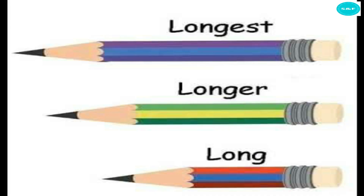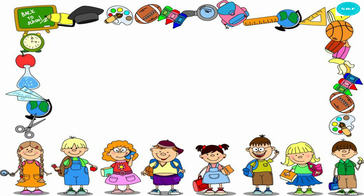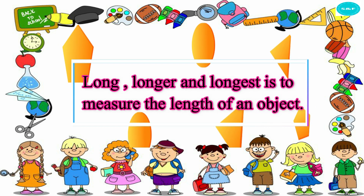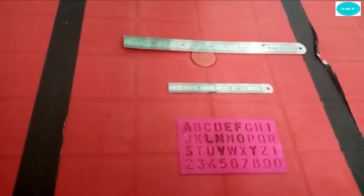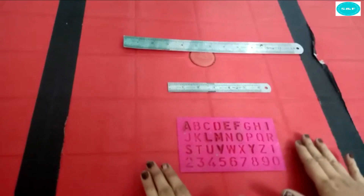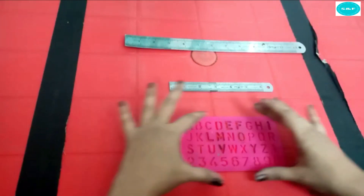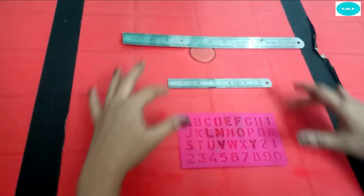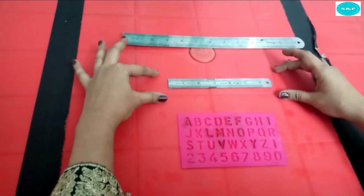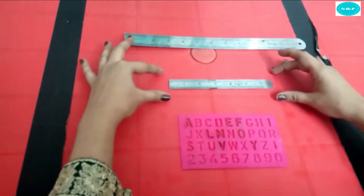Now we will learn about the concept of long, longer, and longest. Long, longer, and longest is used to measure the length of an object. Now let's take an example of rulers. This is the long ruler. This is the longer ruler.